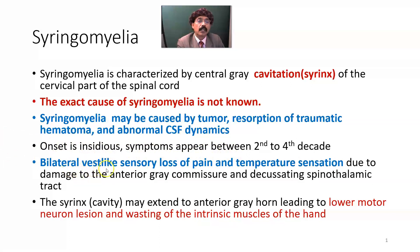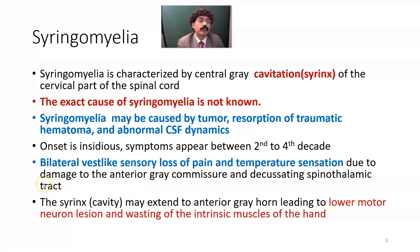There is bilateral cape-like or vest-like sensory loss of pain and temperature sensation due to damage to the anterior grey commissure and decussating spinothalamic tract. So pain and temperature will be lost from the upper part of the body, but tactile sensation is usually intact.